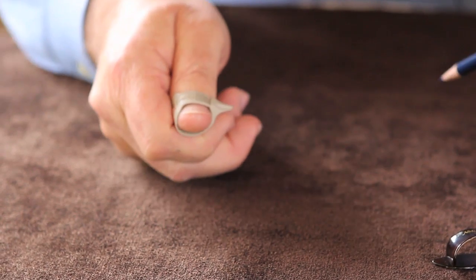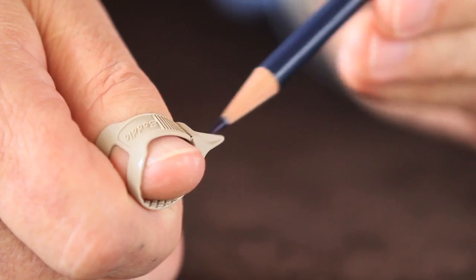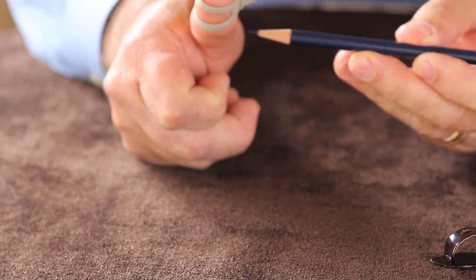You have greater control with this pick because it operates off the side of your thumb instead of off the soft, cushiony pad of your thumb.